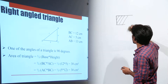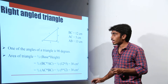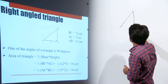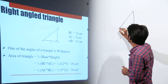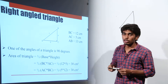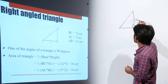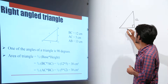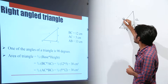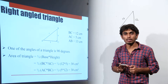Let's start with the right angle triangle. A right angle triangle is a triangle which has one angle equal to 90 degrees. Here we are given three sides: one side is 12 centimeters, this side is 5 centimeters, and this side is 13 centimeters. This is the right angle. We need to find the area of this triangle.